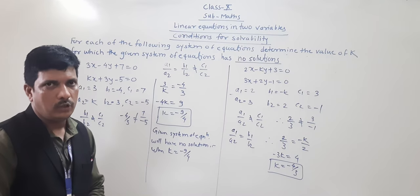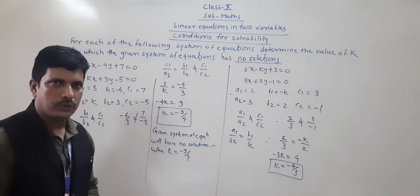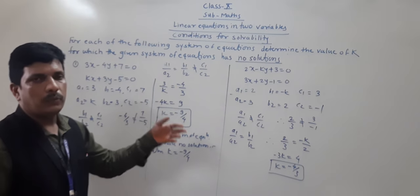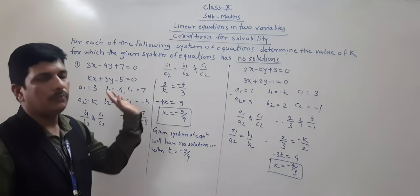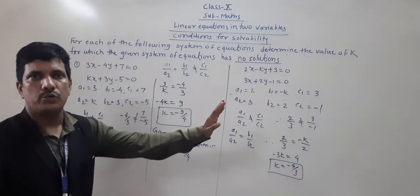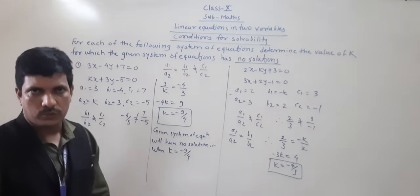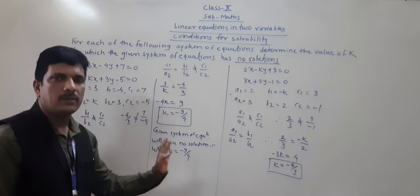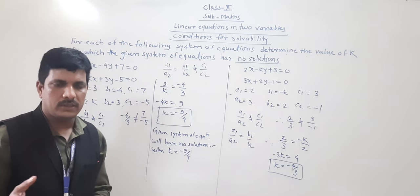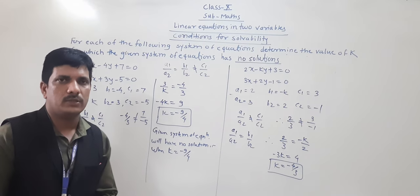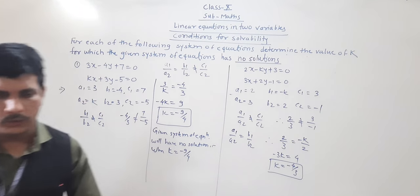Today we have seen all three types: how to find the value of k for unique solution, infinitely many solutions, and no solutions. Solve the same examples again in your notebook. Some examples are also given in the NCERT textbook, so solve all the examples. Thank you.